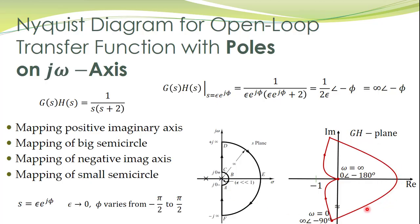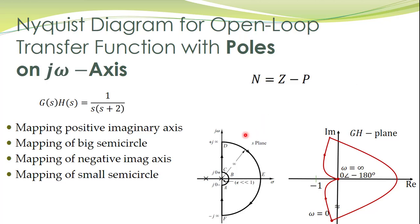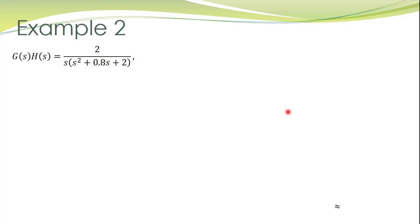Once we have the Nyquist plot, the rest of the analysis is as usual. We apply the Nyquist expression. How many poles of the open loop transfer function are in the right half s-plane? No poles, so P = 0. And how many encirclements of the minus one point? There is no encirclement, so N = 0. Since N = 0 and P = 0, Z = N + P = 0, which means the closed loop system is stable.